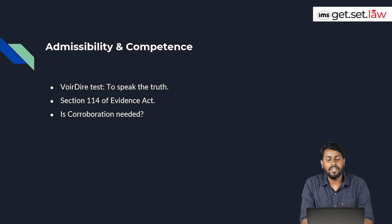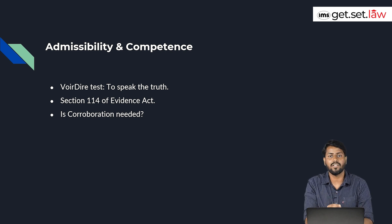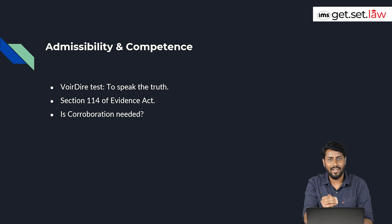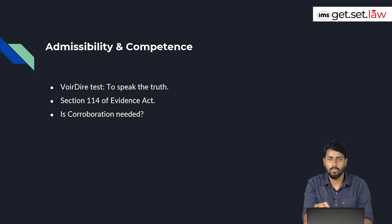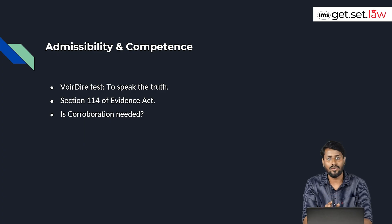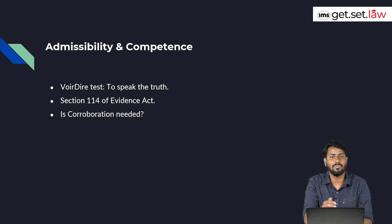When we talk about the admissibility and competence of a child witness, the first test is the voir dire test — meaning the ability to speak the truth. If a court is asking questions from a child witness, say of 7 years of age, the court will ask some random questions around the facts — the child's name, where they live, the name of their school, or information about their neighborhood. Through these questions, the court is trying to understand whether the person is able to speak the truth or not.